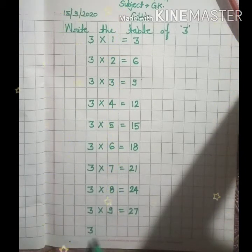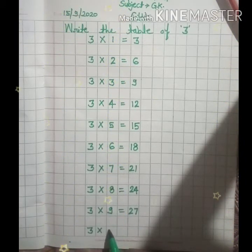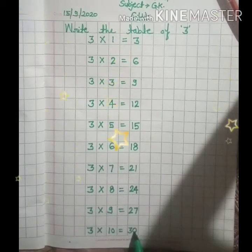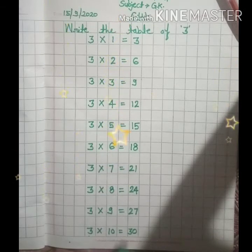3 times 10 is equal 30. 3 times 10 is 30.